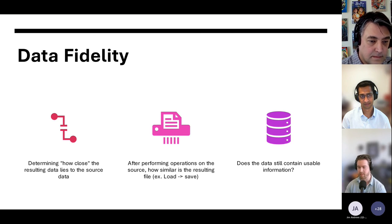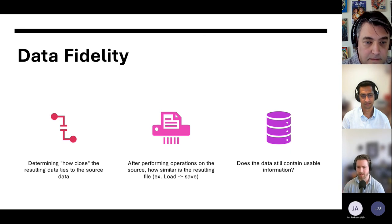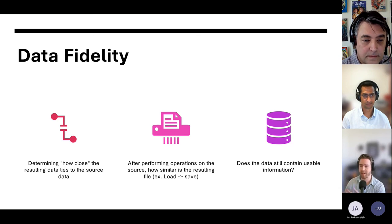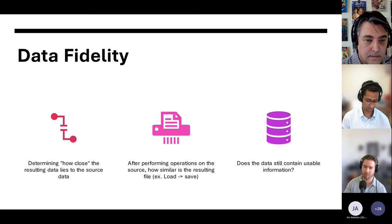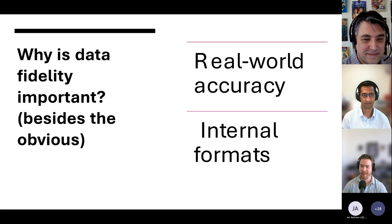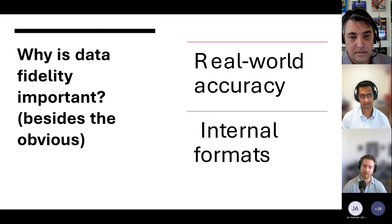There are two other important aspects of fidelity. One is: after performing operations on the source data, how similar is the resulting data to the original? A simple example that comes up all the time in pipelines is loading OpenDrive data and saving it out — how accurate is that resulting file? And related to that, going through a pipeline, how usable is the end data compared to the original source? The two main reasons this matters are real-world accuracy and internal formats of software.